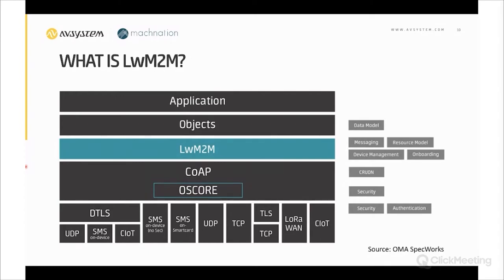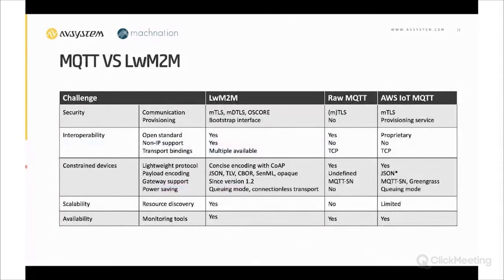Now let's compare and contrast MQTT and LwM2M, especially against the challenges set at the beginning. On security there are two aspects: communication and provisioning. For communication, LwM2M provides mutual TLS and DTLS — the 'M' here emphasizes mutual authentication, where the client is also authenticated, which is not the default in TLS — and also OSCORE for application-layer, end-to-end encryption, preventing proxies from seeing message content in transit.